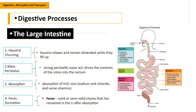After the small intestine, food particles pass to the large intestine. Four major processes happen here. First is haustral churning — haustra relax and remain distended as they fill up. Second is mass peristalsis — a strong peristaltic wave that drives the contents of the colon into the rectum. Third is absorption of water, ions such as sodium and chloride, and some vitamins, back into the bloodstream. Fourth is feces formation — feces is a solid or semi-solid chyme that remains in the large intestine after absorption.